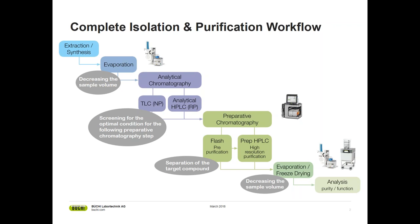Now, if the sample is completely new for you, you will start to screen for the optimal conditions for your separation. That's done via analytical chromatography such as TLC or HPLC. TLC, which is thin layer chromatography, is a rather cheap and simple method and is for sure the first choice here. For analytical HPLC, you need special equipment which is not always available in a lab.